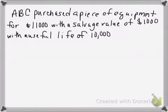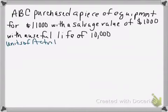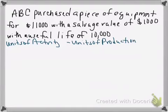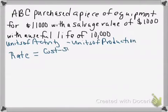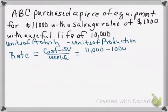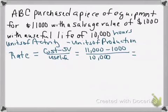The next item is still using the same fact pattern but looking at what we call units of activity, also known as units of production. To find your rate for units of production, it looks similar to straight line: take cost minus salvage value divided by useful life — but here useful life is 10,000 hours. So we have $11,000 minus $1,000, divided by 10,000 hours, giving us a rate of $1 per hour.